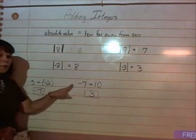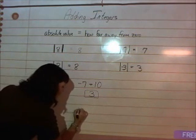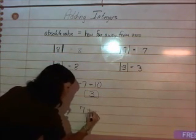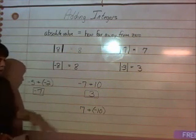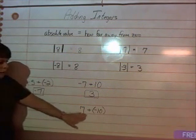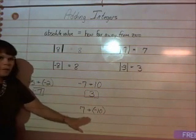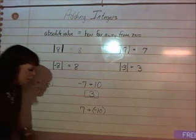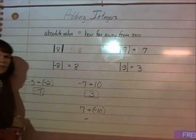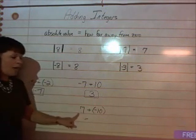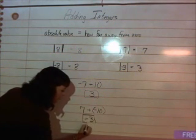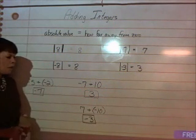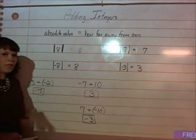Now, if we were to reverse that, let's say that I have seven plus a negative ten. Well, I have seven positives plus negative ten, so I have more negatives than positives. So, I know my answer is going to be negative. And how many more negatives do I have than positives? I have three.